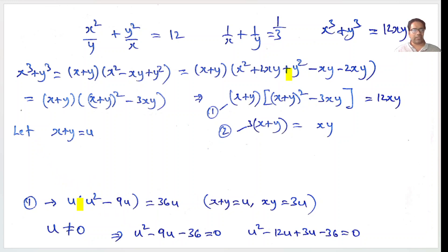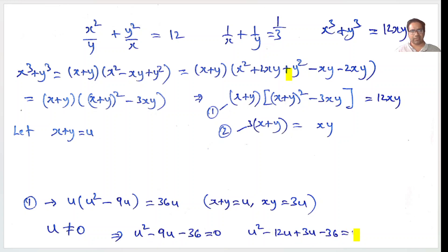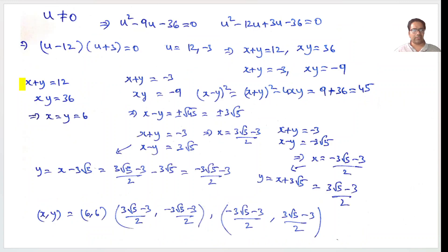We can cancel u — remembering that u is not equal to zero, because if u equals zero then x plus y equals zero, making xy equal zero, but xy is a denominator so that is not possible. After cancelling u, we get u squared minus 9u minus 36 equals 0. We can factor this as u minus 12 times u plus 3 equals 0.